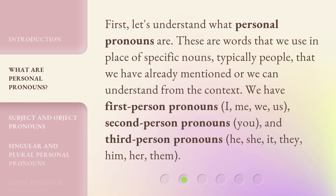First, let's understand what personal pronouns are. These are words that we use in place of specific nouns, typically people, that we have already mentioned or we can understand from the context. We have first-person pronouns: I, me, we, us. Second-person pronouns: you. And third-person pronouns: he, she, it, they, him, her, them.